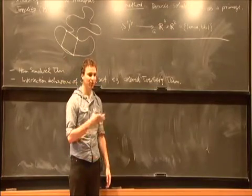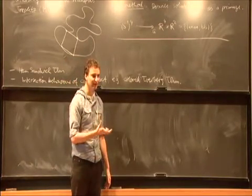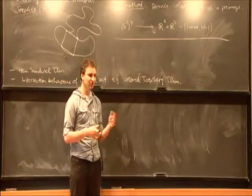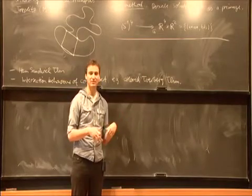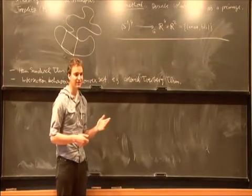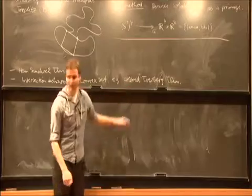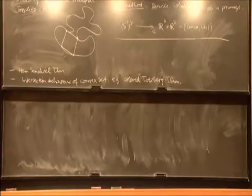What's Tverberg's theorem? Well, it says how many points you need in d-dimensional space, such that you can partition the given point set into a certain number of points, say r parts, whose convex hulls intersect. And there's a colored version of this, which looks as follows.